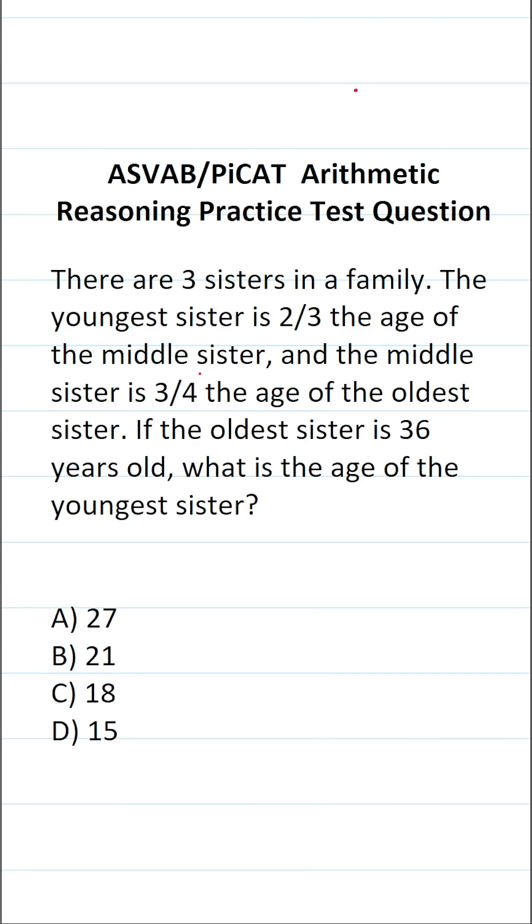This arithmetic reasoning practice test question for the ASVAB and PyCat says, there are three sisters in a family. The youngest sister is two-thirds the age of the middle sister, and the middle sister is three-fourths the age of the oldest sister. If the oldest sister is 36 years old, what is the age of the youngest sister?